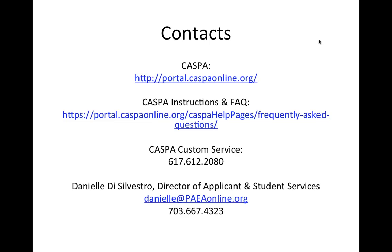It is important to note that this section is not verified by CASPA and should be used to help you determine whether or not you have all of the required courses to apply to any one program. For example, if a program requires a biochemistry course and you are not able to list a biochem course per your transcripts, you may want to consider another program to apply to. Even if you match all of your courses to the listed prerequisites, programs still make the final determination on whether or not they will accept them. This section does not guarantee that your courses will be accepted by any program.